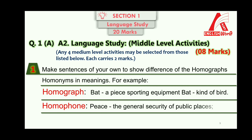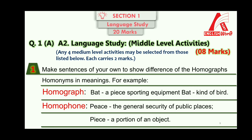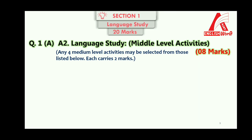Question one A, A2 — language study medium level activities — will be for 8 marks. Any four medium level activities may be selected from the listed options, and each activity carries 2 marks.